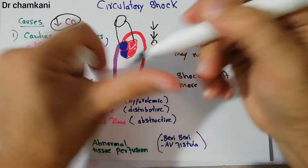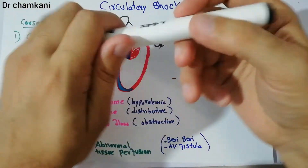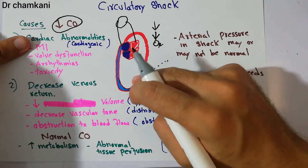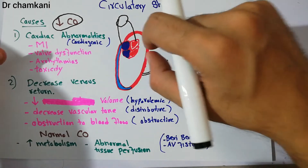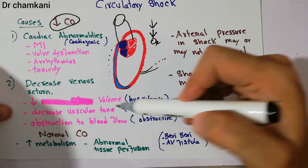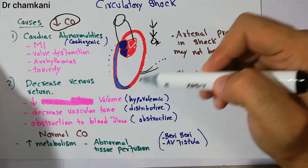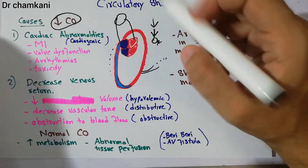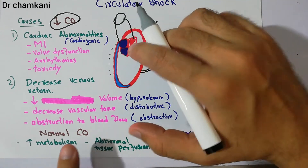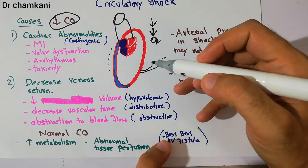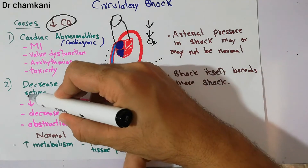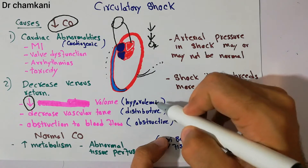Decreased venous return can be due to decreased volume of blood. For example, due to some trauma or accident there is hemorrhage, there is loss of blood. Blood goes outside the system and the proper amount of blood will not be able to return back to the heart. This type of condition is known as hypovolemic shock — it can be due to loss of blood or loss of fluid, both leading to decreased volume and hypovolemic shock.